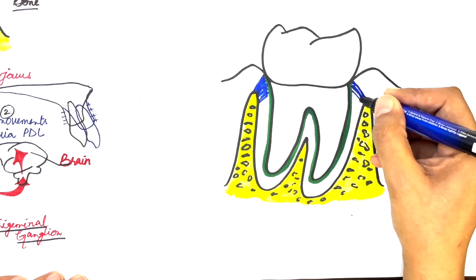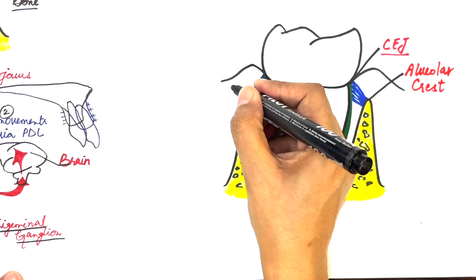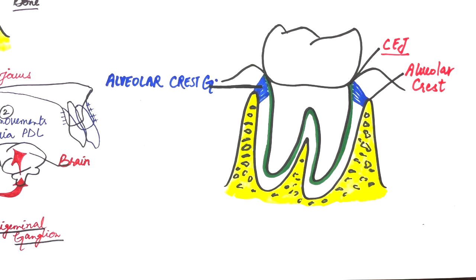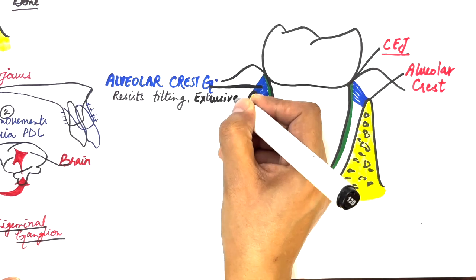The alveolar crest group is attached to the cementum just below the cemento-enamel junction. It then extends in a downward or apical direction and inserts into the alveolar crest. These fibers resist tilting, extrusive, intrusive, and rotational movements.